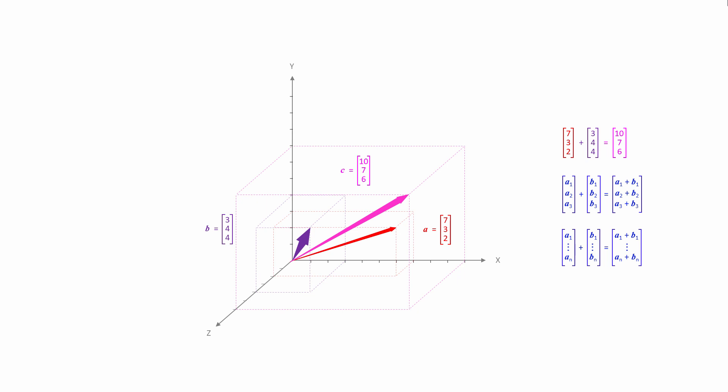As you can see then, adding two vectors together is not rocket science. Well, it might be.